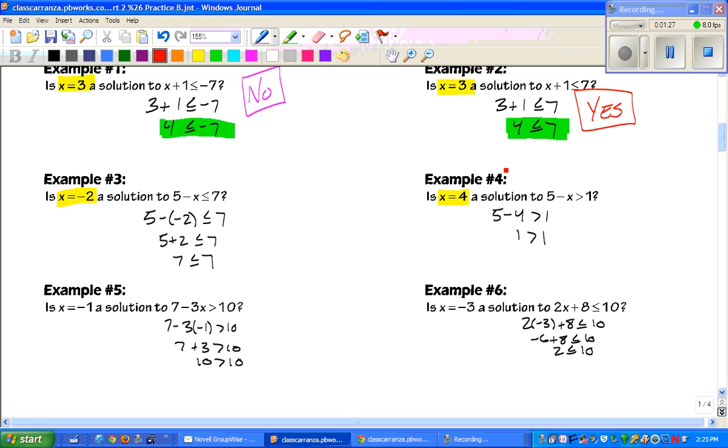For number three, a couple of these last ones I really like. When you solve everything, first off, hopefully you guys notice that two negatives right here, you get a positive. So, 7 is less than or equal to 7. That actually is yes, because seven is equal to. That's what that little line underneath it means.